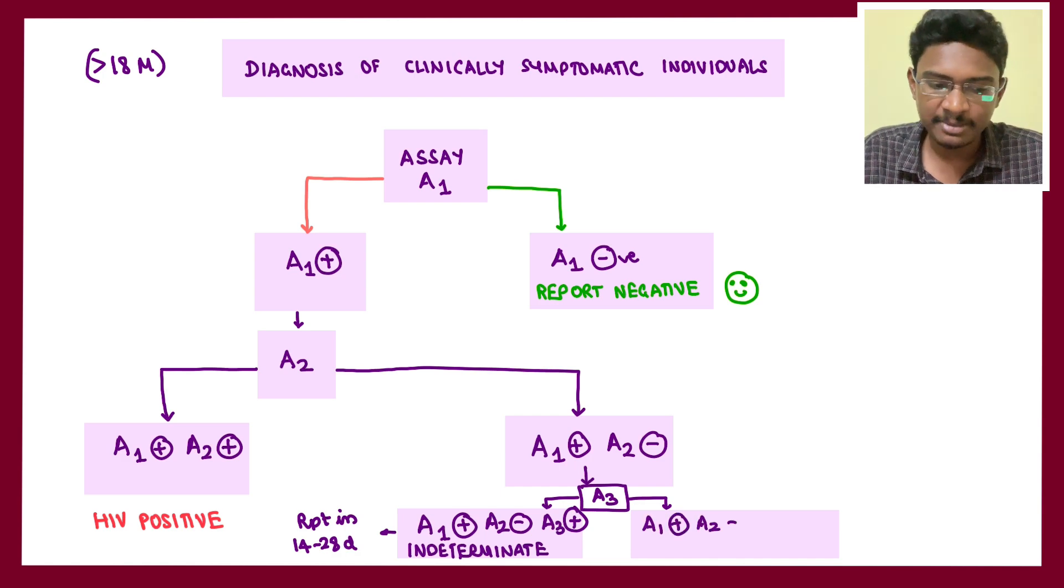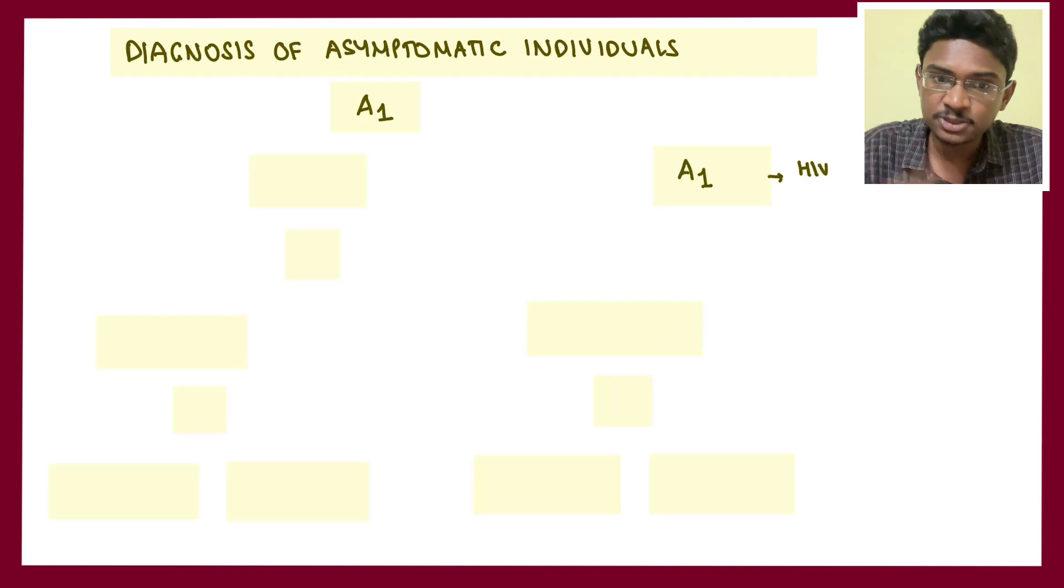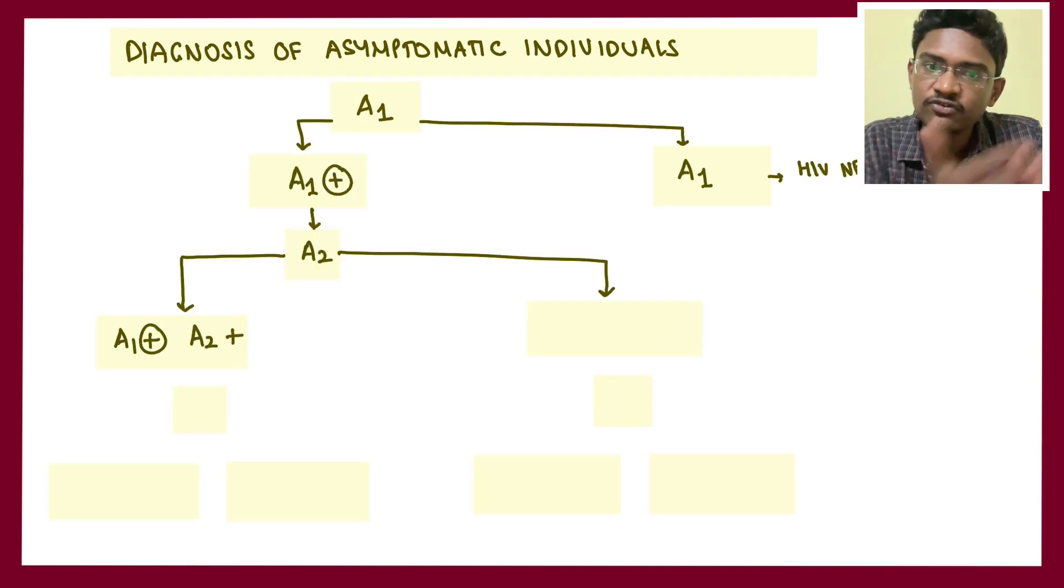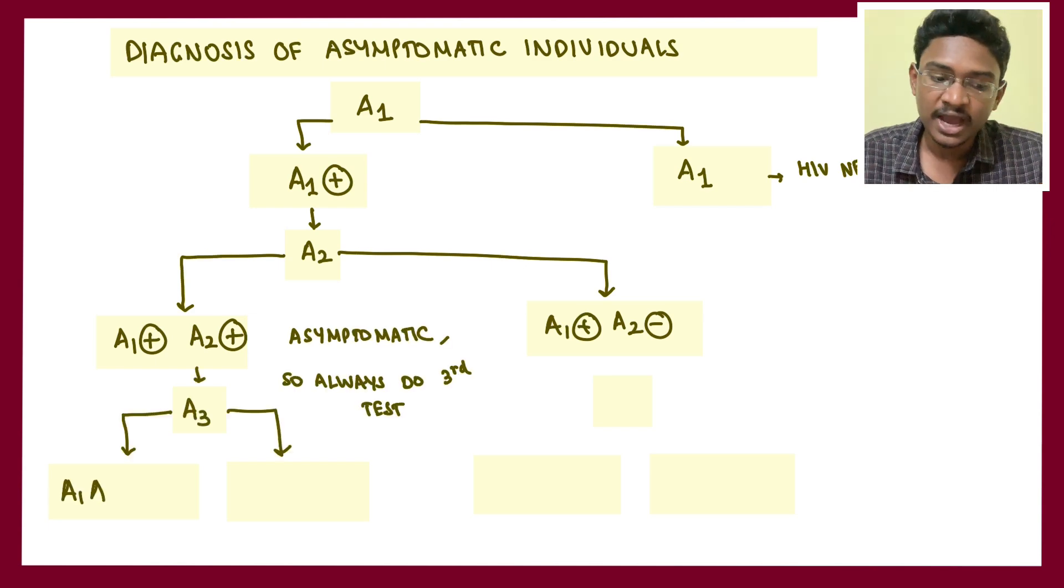For diagnosis of asymptomatic individuals, first do assay one. If it is negative, report as negative. If it is positive, go sequentially for the next test. If next test is positive but the patient is asymptomatic, it's always best to do the third test also.